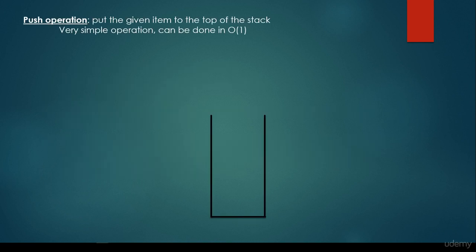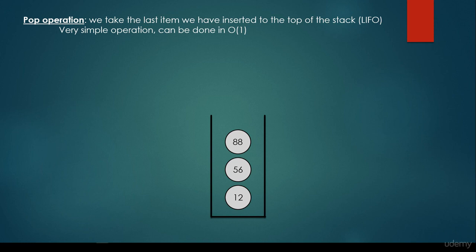So for example we have this push operation. We put the given item to the top of the stack. It is a very simple operation, it can be done in O(1), so constant time complexity. So we would like to push 12 on the stack, we just insert it. Then we push 56, we are going to put it on top of the 12. We are going to push 88, it's going to be the next item we push into the stack. So the push operation is basically adding items to the stack.